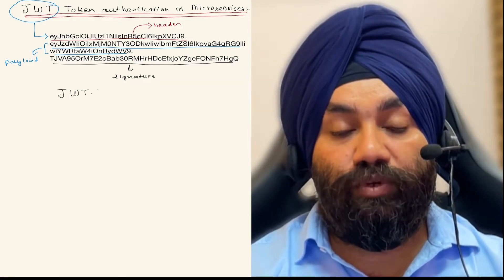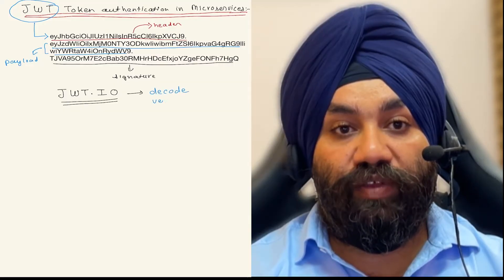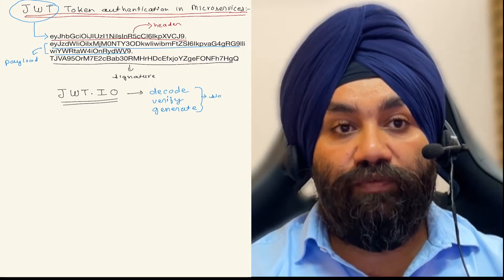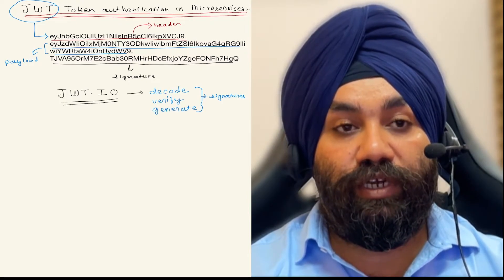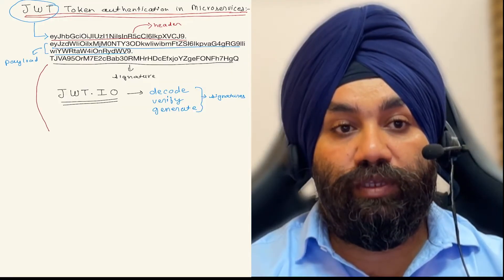Now there is a website JWT.io. If you use this website, you can decode, verify and generate JWT tokens. When we try to decode this JWT using this website JWT.io, this is what we get.